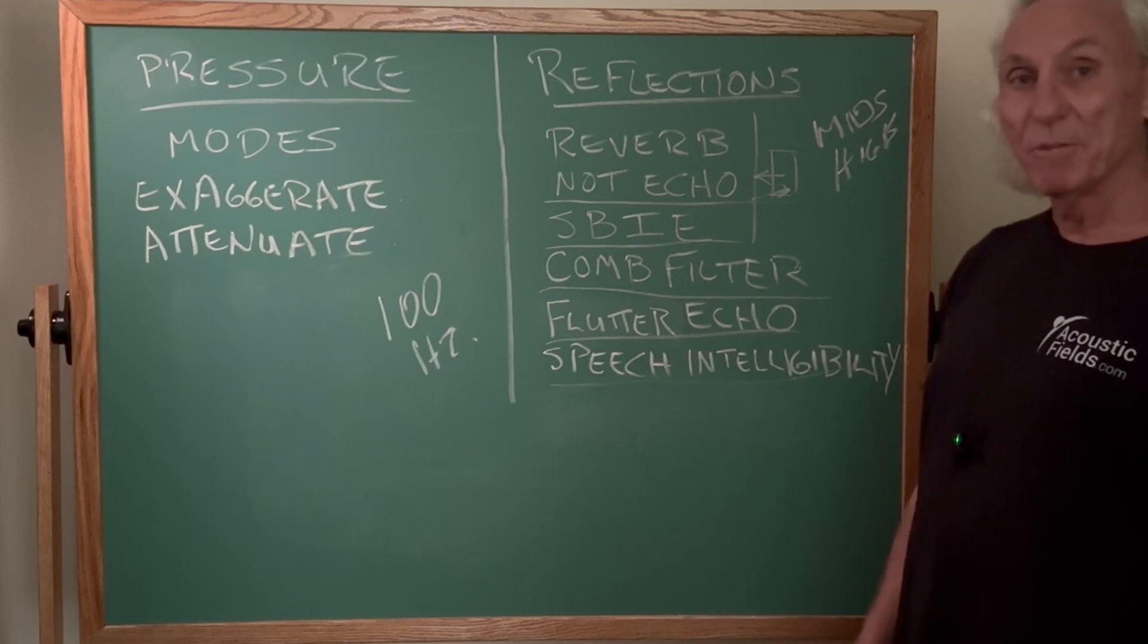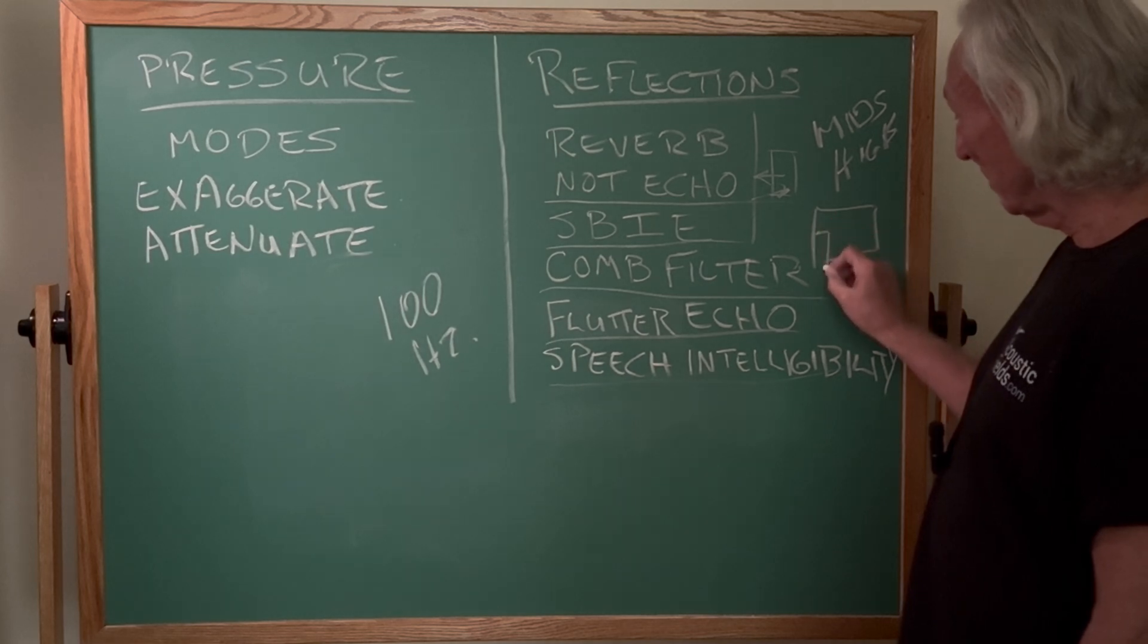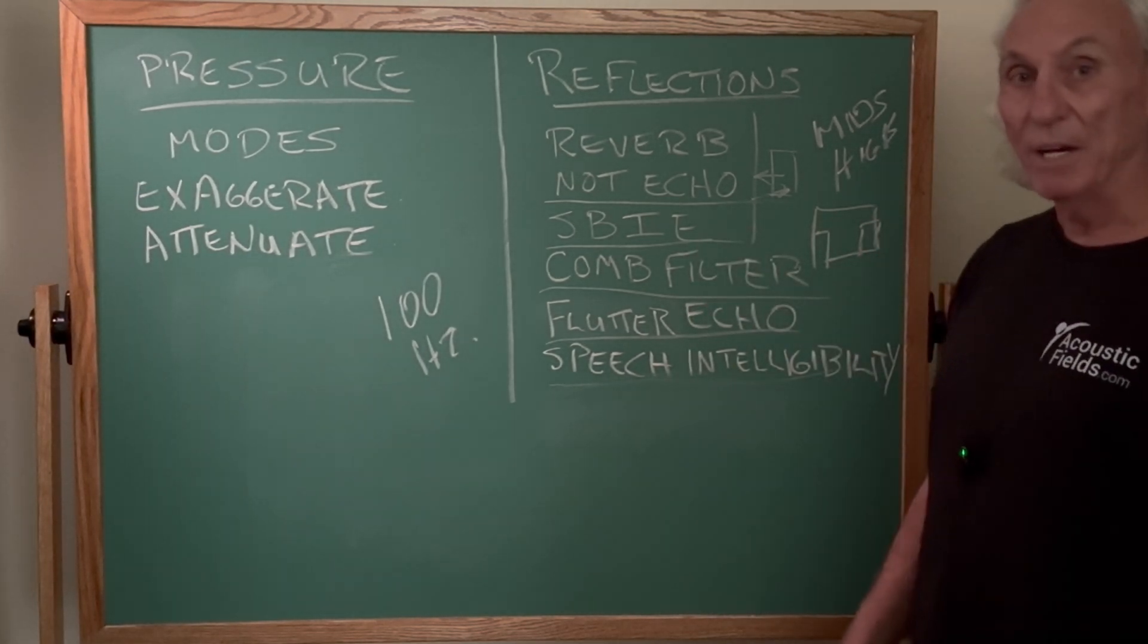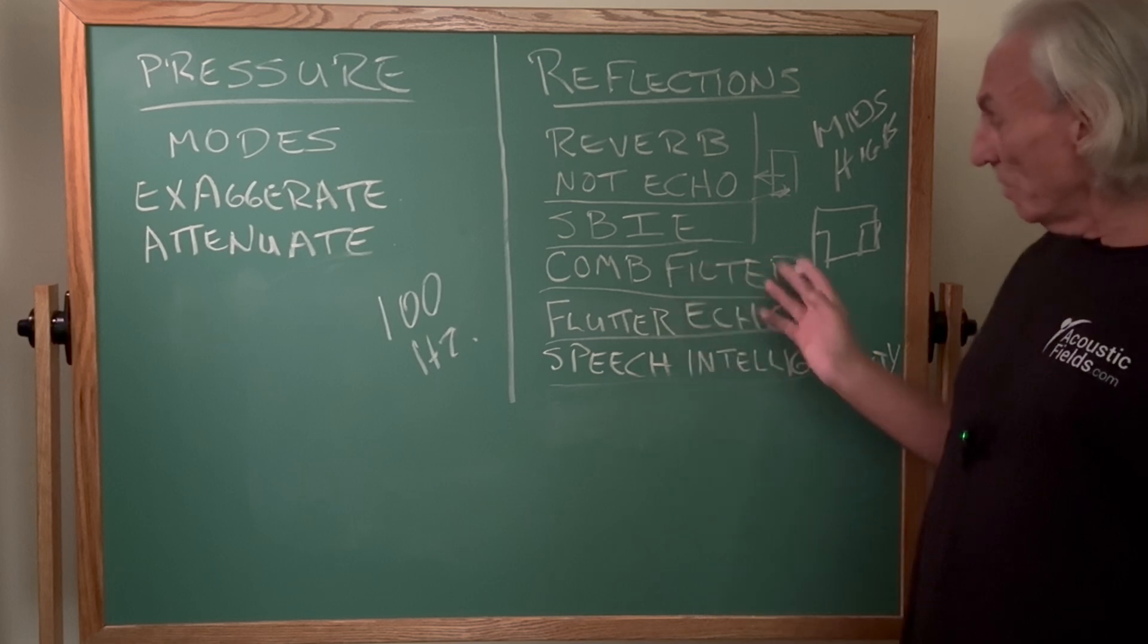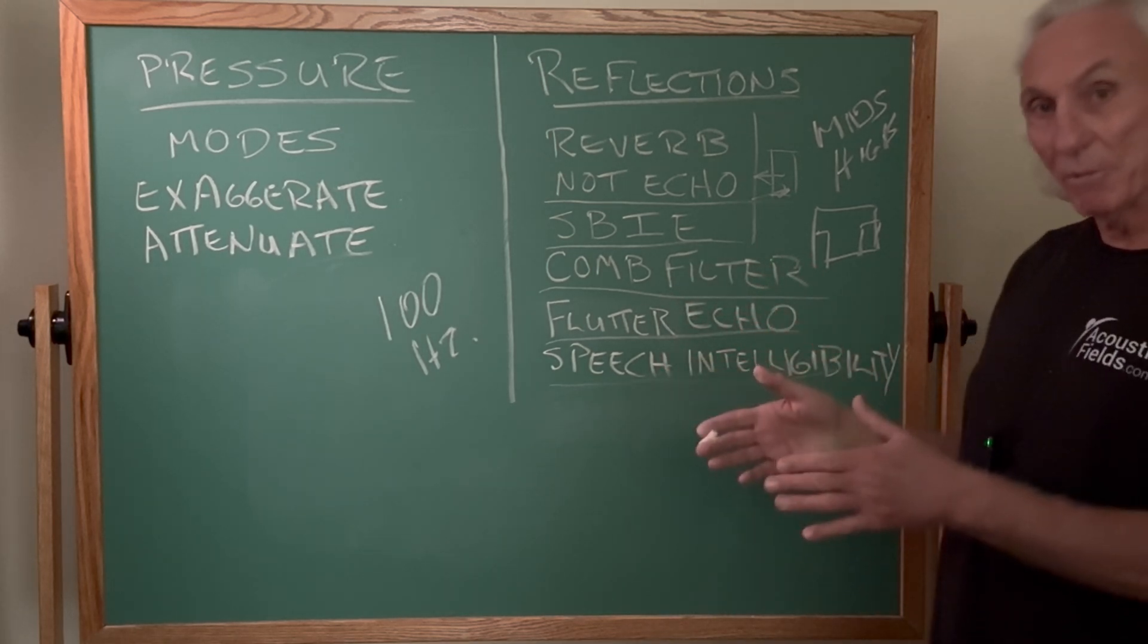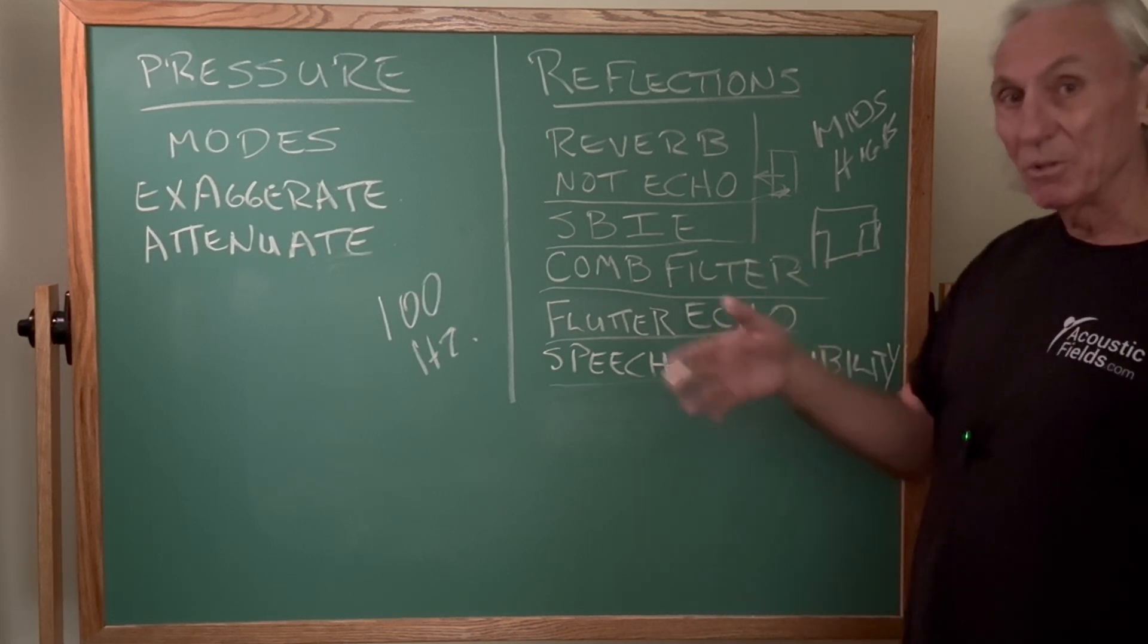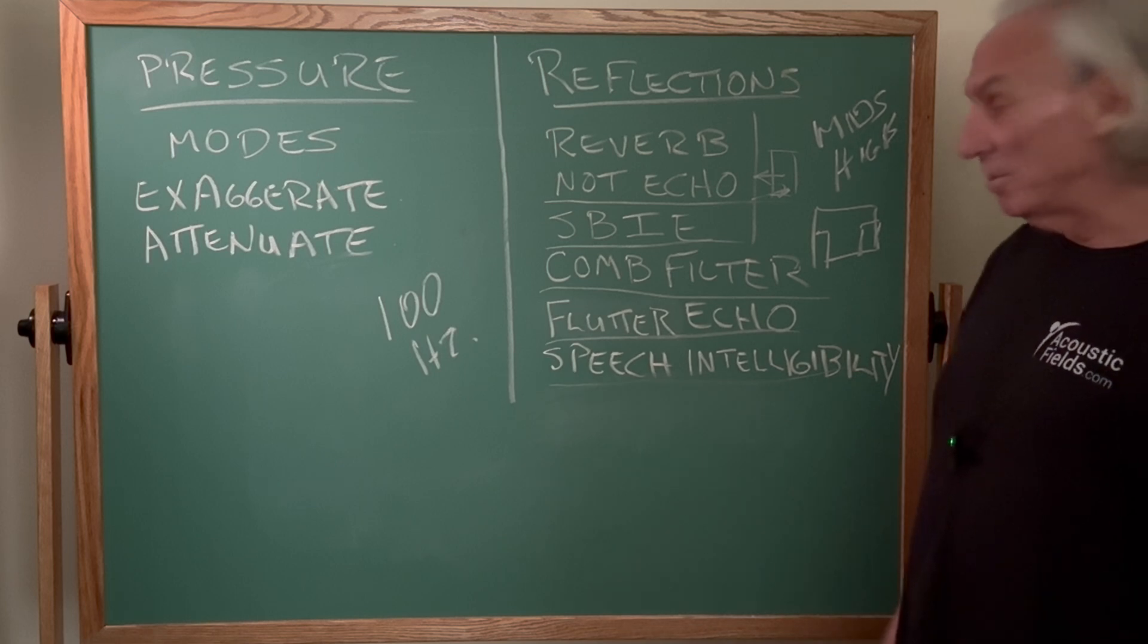Speaker boundary interference effect. When you put your speaker too close to a wall, we see this all the time. You're going to get more wall sound than you are speaker sound. Comb filter, same situation. You're going to get a series of reflections that are going to be at the same amplitude, so it looks like a teeth of a comb on a graph.